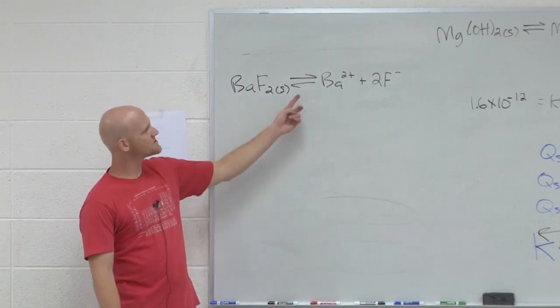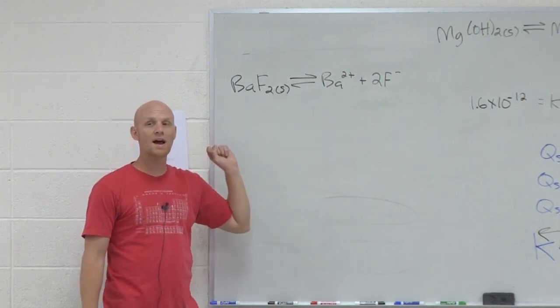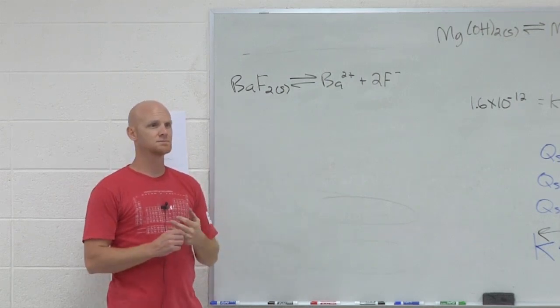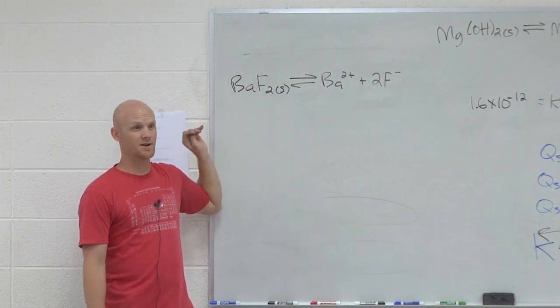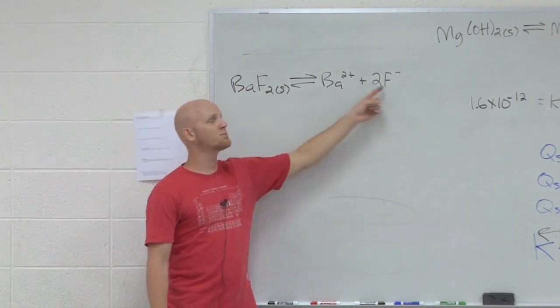So my question then is, how could I shift this equilibrium to the right? Could I add more solid? No, solids don't shift equilibria, right? But I could remove products.